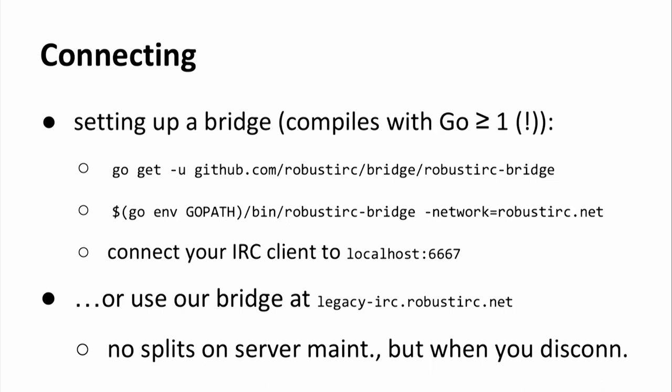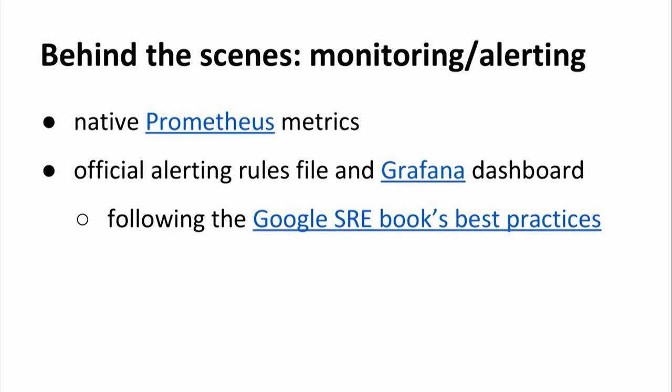To participate in such a network, you can set up the bridge using the commands on the slide — it's just one go get, then you run it and point it to the network you want to join. Afterwards, you connect your IRC client to localhost. The bridge compiles with Go version 1 and we regularly test this, so even an old server running Debian oldstable could run it. If installing the bridge is not feasible, you can use a bridge we run at legacy.robustirc.net. However, if you use our hosted bridge, you won't see network splits during server maintenance, but you'll still be using a TCP connection, so when you disconnect from that bridge you're still out. It's better to run the bridge on the computer where your IRC client runs.